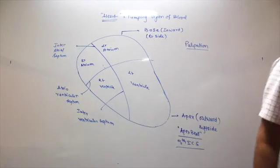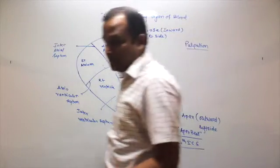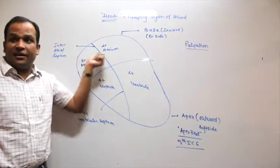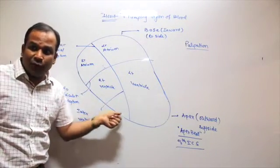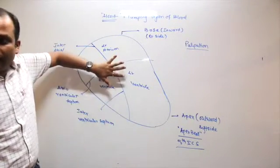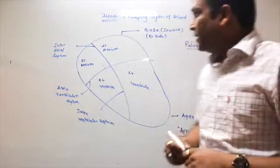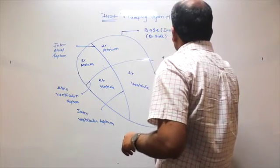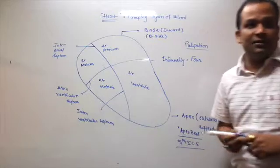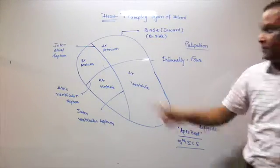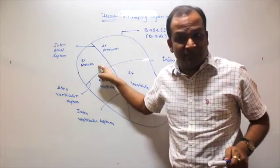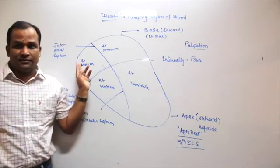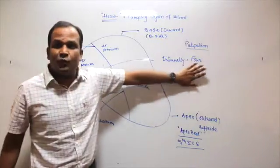So internally heart is divided into four parts with the help of three septums. This part is left and right - interatrial. Here is interventricular, and this is atrioventricular. Internally it is divided into four parts. So how many chambers are there internally? Four. What do we call them? Two atrium and two ventricles. Remember, these are not auricles, they are atrium.